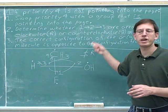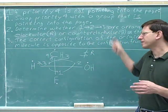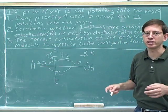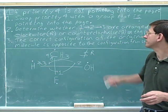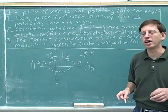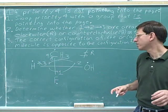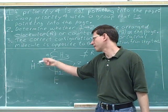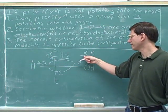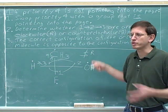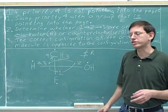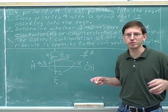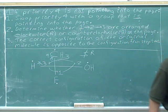Now that we've been introduced to this method, you can see that the good news is it will take you hardly any longer than case one where the number four priority was pointing into the page. The only extra steps are crossing out the original priorities and making a single swap, and crossing out the original letter and replacing it with another. It's certainly much more efficient and much less likely to lead to mistakes than trying to mentally rotate the molecule so that the number four would be pointing away from you.